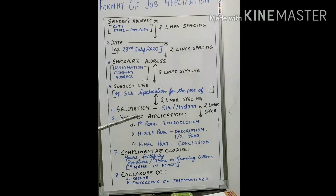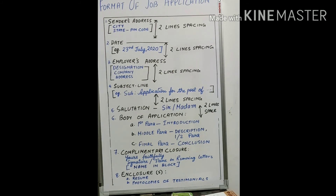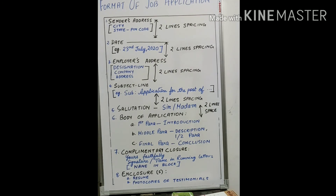The middle paragraph provides a description of what you have to offer to the company — how you are going to be profitable and add benefits. You can break this into two consecutive paragraphs. In one, mention how your qualifications match the job; talk about your previous experience if any, and don't forget to mention your achievements and success stories — how you achieved certain targets or goals in your previous company.